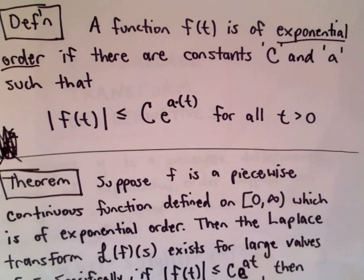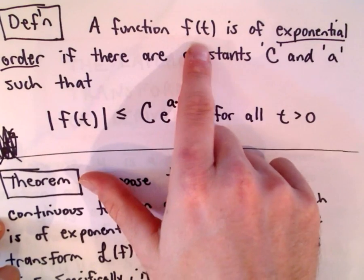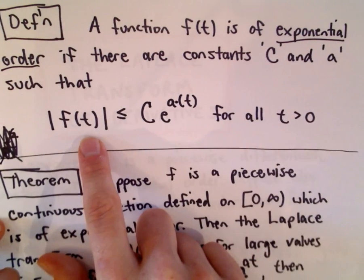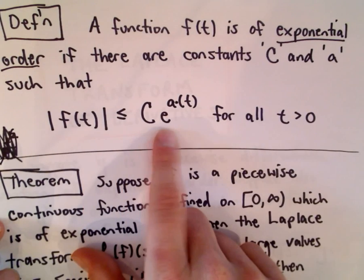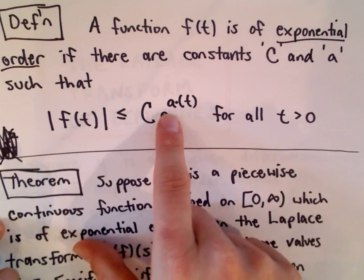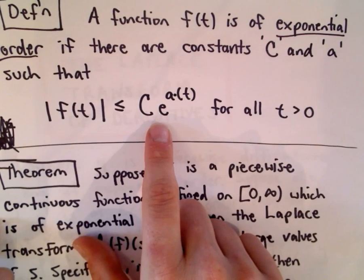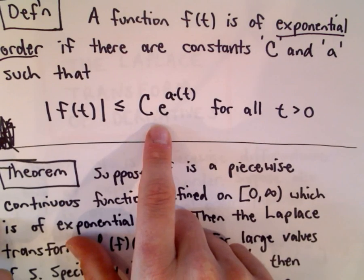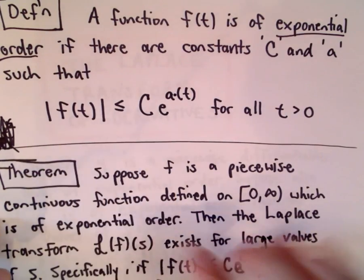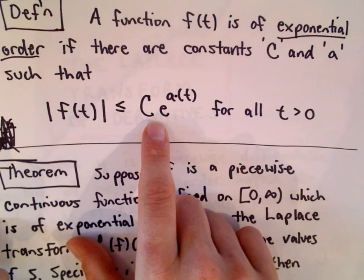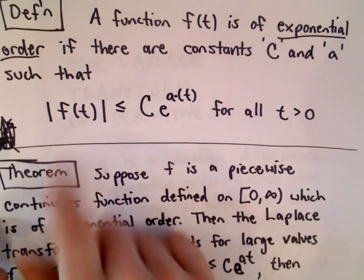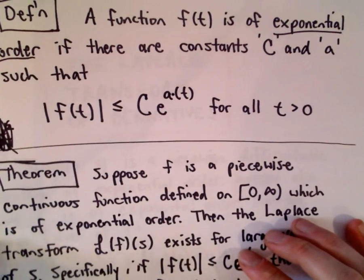The first definition: we say a function f(t) is of exponential order if there are constants C and a such that the absolute value of the function is always bounded by Ce^(at). This basically says a function is of exponential order if it goes to infinity slower than an exponential function. Lots of functions satisfy this property since exponential functions grow very fast.